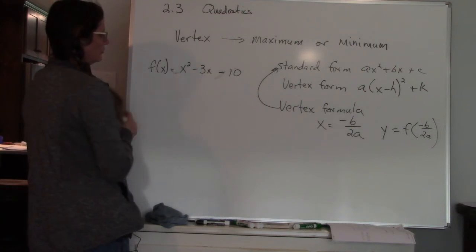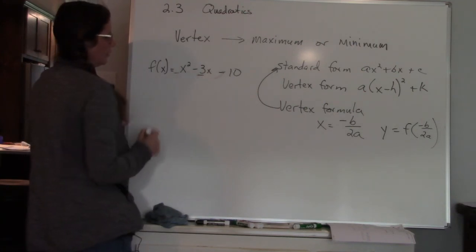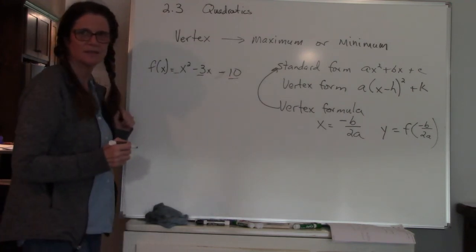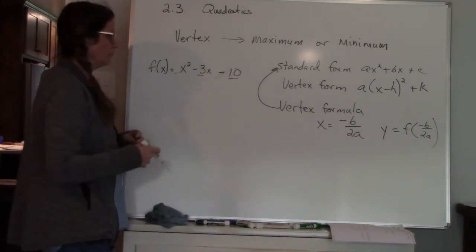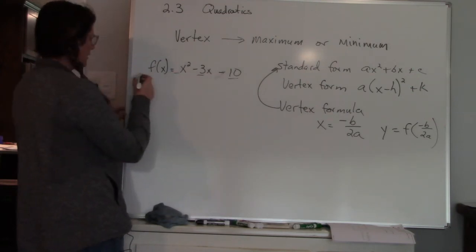is the number in front of your x squared, the b is the number in front of your x term, and the c is the constant. That's where a, b, and c come from. A is 1, b is negative 3, and c is negative 10.